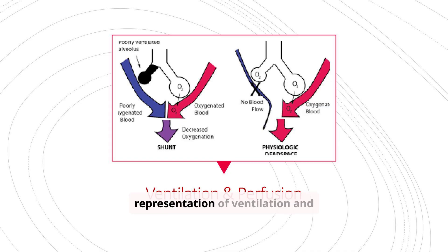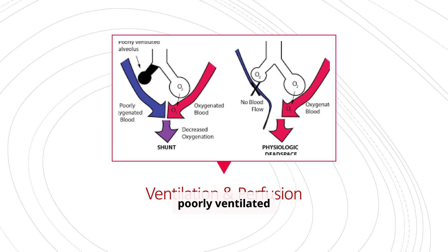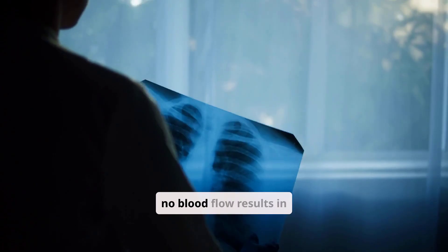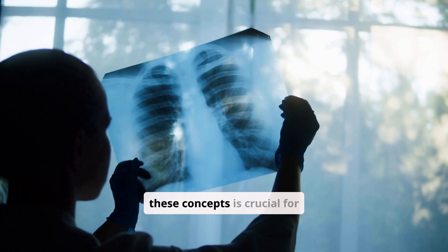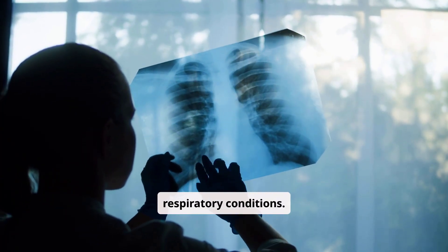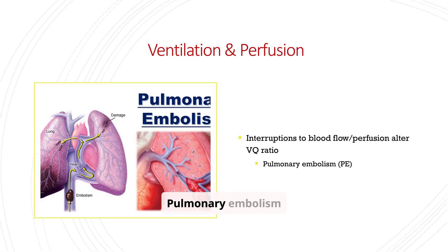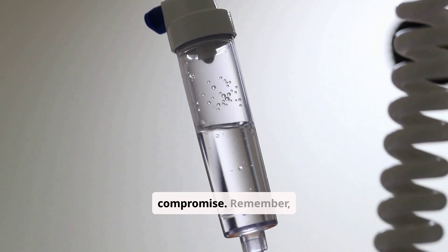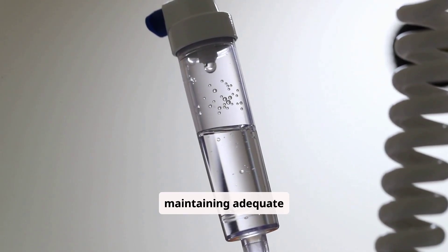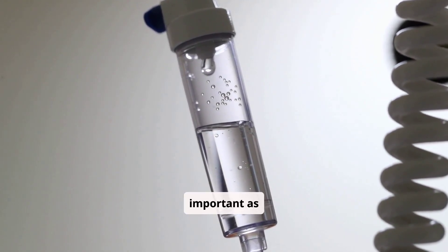A poorly ventilated alveolus leads to a shunt, while an alveolus with no blood flow results in physiologic dead space. Understanding these concepts is crucial for diagnosing and managing respiratory conditions. Pulmonary embolism is a prime example of how interruptions to blood flow alter the VQ ratio, and this can lead to significant respiratory compromise. Maintaining adequate perfusion is just as important as ventilation.